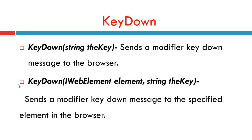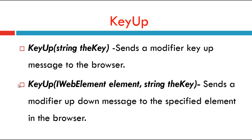First, let's see what the KeyDown method is. The KeyDown method takes a key as a parameter and sends a modifier key down message to the browser. There is also an overloaded version of KeyDown that takes a web element and a string key parameter, which sends the modifier key down message to the specified element in the browser.